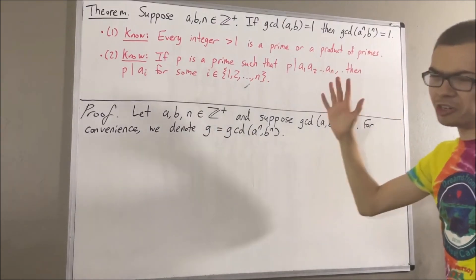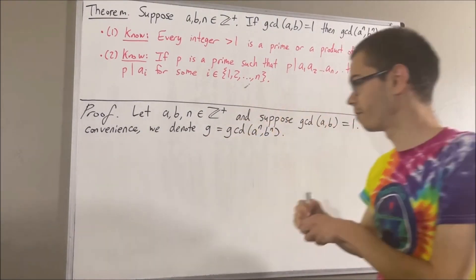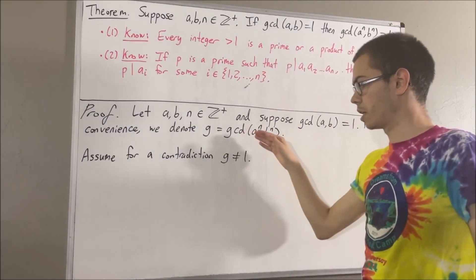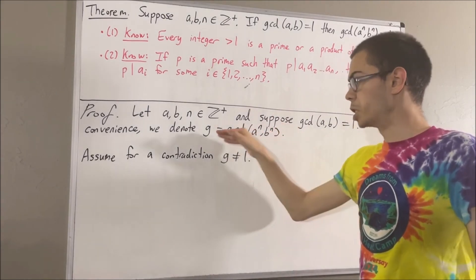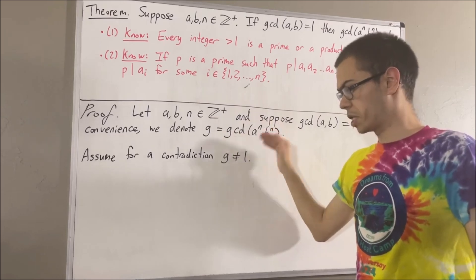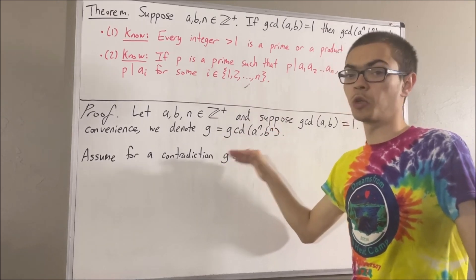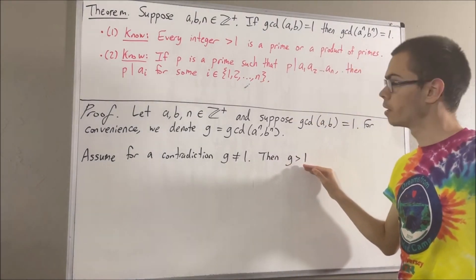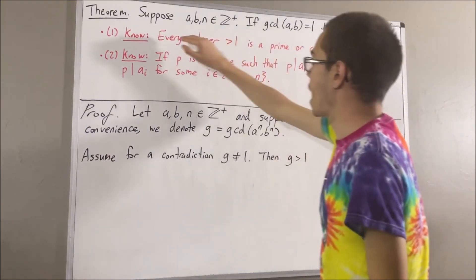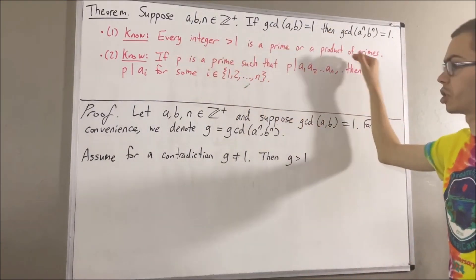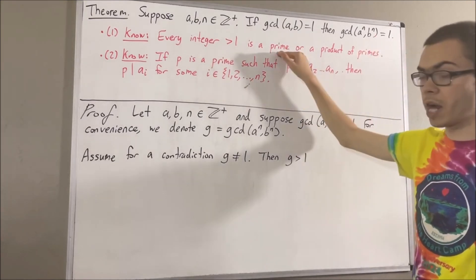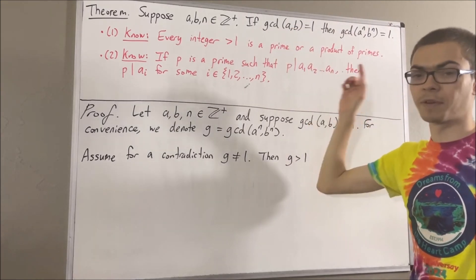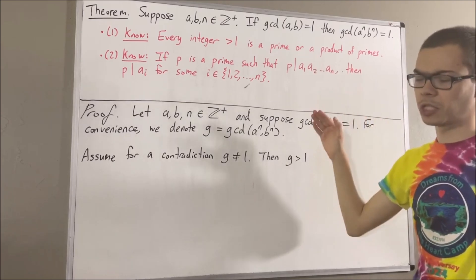Let's assume for a contradiction that g is not equal to 1. We know that the greatest common divisor is a positive integer, so g must be greater than or equal to 1. But since g is not equal to 1, we must have that g is greater than 1. So g is an integer greater than 1. By our first fact, every integer greater than 1 is a prime or a product of primes. Therefore g is a prime or a product of primes, which means that g has at least one prime divisor. I'll call that prime divisor p.